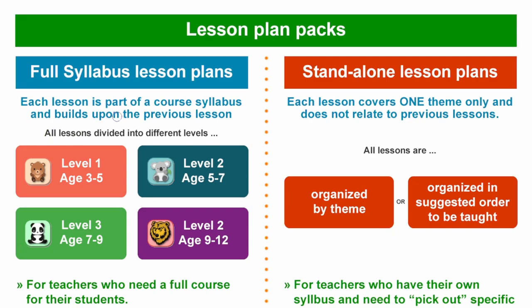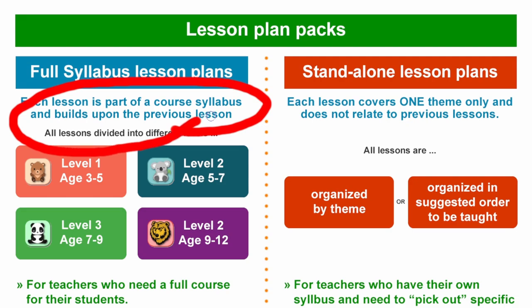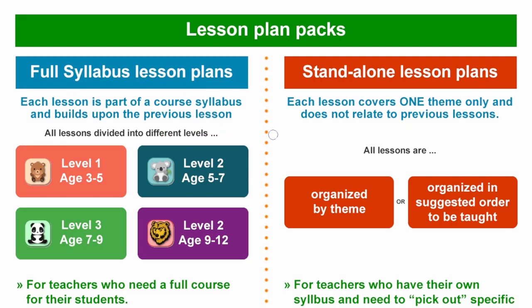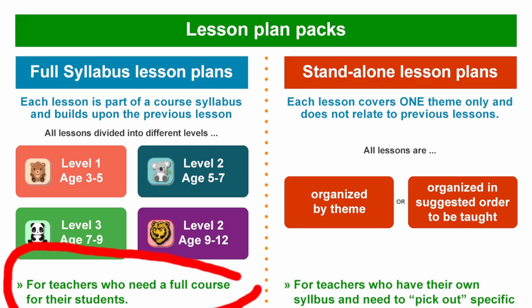Each lesson is part of the course syllabus and builds upon previous lessons. We've divided the lessons into four age groups: Level 1, Level 2, Level 3, Level 4 - from 3 to 5 year olds all the way up to 9 to 12 year olds. These lessons are for teachers who need a full course for their students. They need to start from Lesson 1. Lesson 2 will build upon Lesson 1 and will include review activities. We'll build upon the vocabulary and language learnt, with each lesson continuing to progress throughout the course, continuously building on what's previously been taught and adding new language, activities and structures.